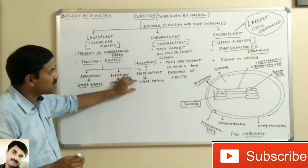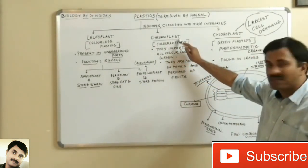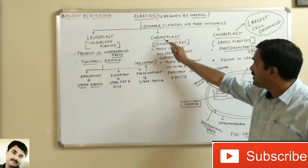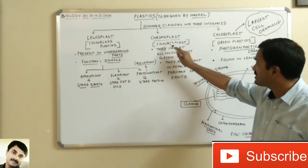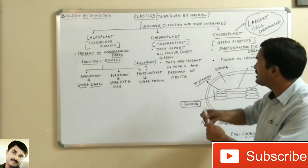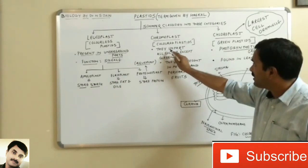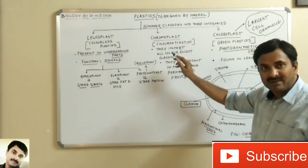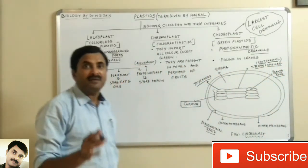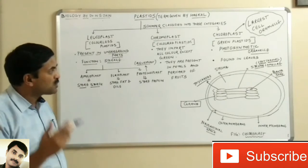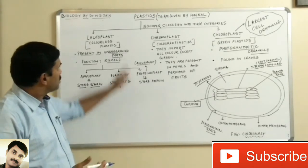The second type of plastid is the chromoplast. 'Chromo' means colored, so these are colored plastids. Their role is imparting color — except green color, they impart all colors. The different colors of petals and fruits that you see in the surroundings are due to chromoplasts only.